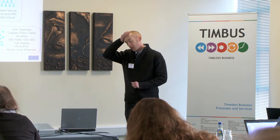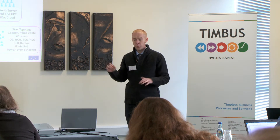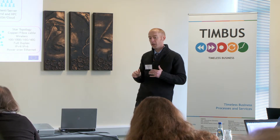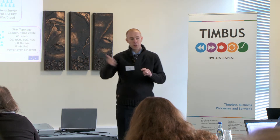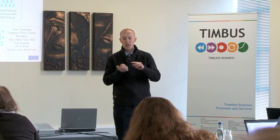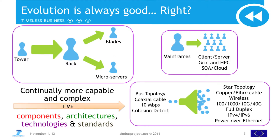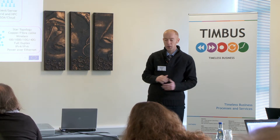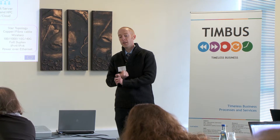With technology we're never standing still — we're moving in lots of different vectors at the same time. One of those is form factors. Rolling back a few years, you had tower servers, then rack-mounted servers becoming denser, and now blades and micro servers are very popular. They're all increasingly denser formats, the same trend you see with laptops going down to mobile devices — it's the same with back-end infrastructure systems.